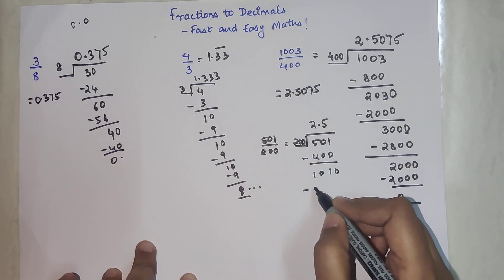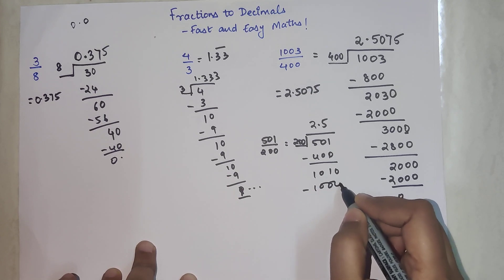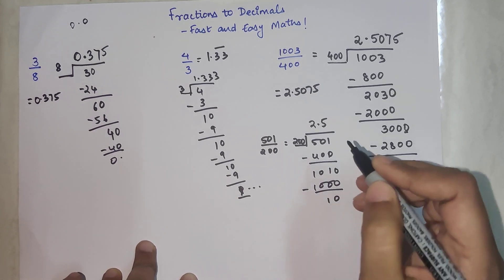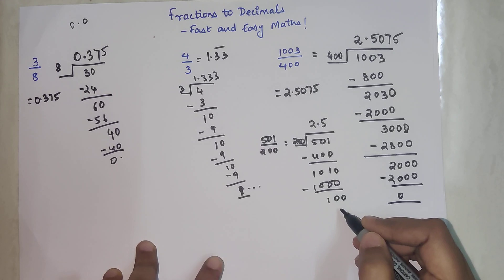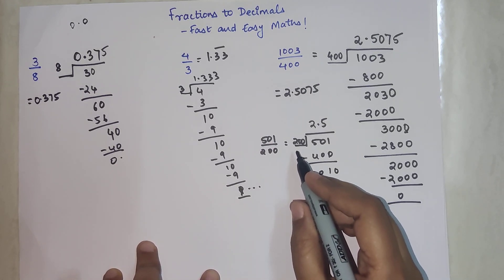So we're taking a point. So we have 2.5. Why 5? Because 200 into 5 gets you 1000. I'm left with 10. Now again a problem because this is getting me 100. Now 100 is smaller than 200.